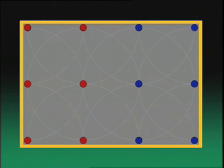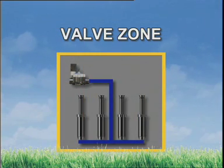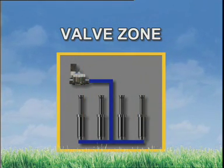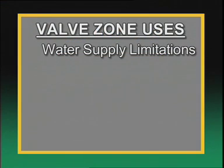In order to control these two groups of sprinklers independently, each must be connected to their own valve. This arrangement is known as a valve zone. In addition to this example, there are several other reasons for designating a specific area as a valve zone.